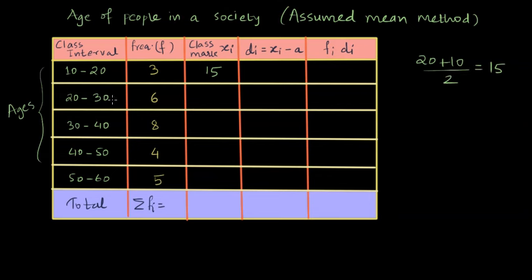Similarly for the second one, 20 plus 30, 50 divided by 2 is 25 and so on. So we can complete writing the class marks. So if I write mean as X bar, one of the methods is to sum up fᵢ Xᵢ divided by summation fᵢ. That means multiplying each frequency and the respective class mark and then summing that up and then dividing it by the total number of frequency.